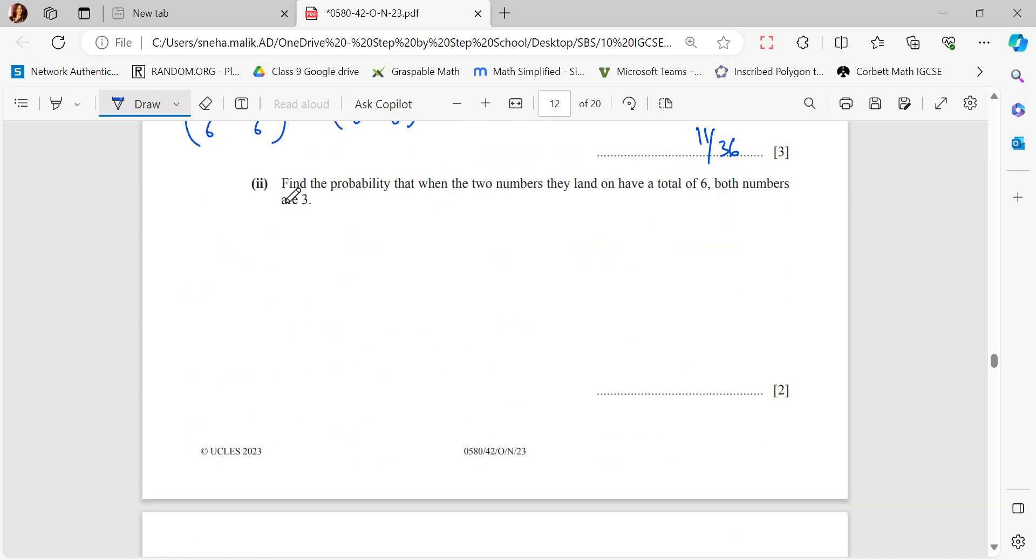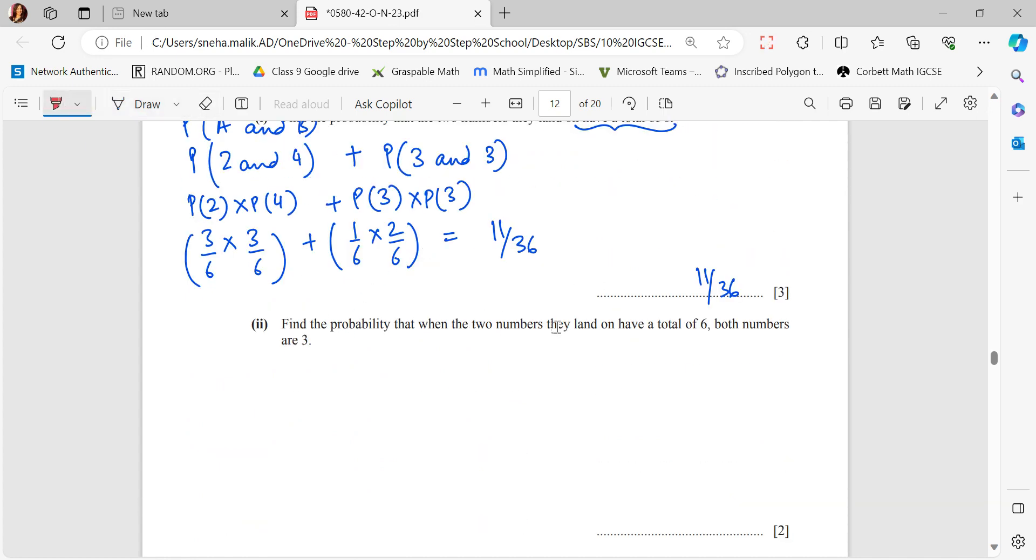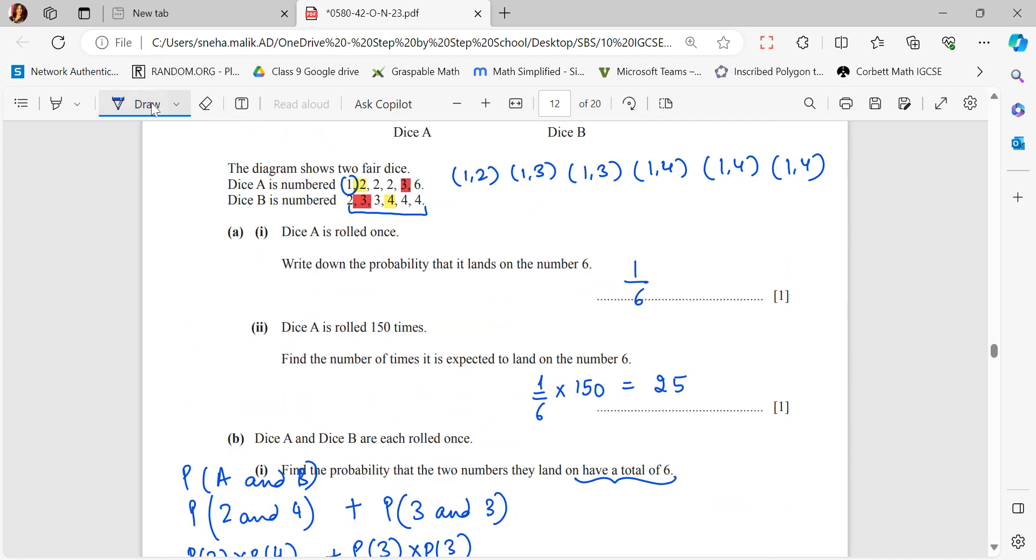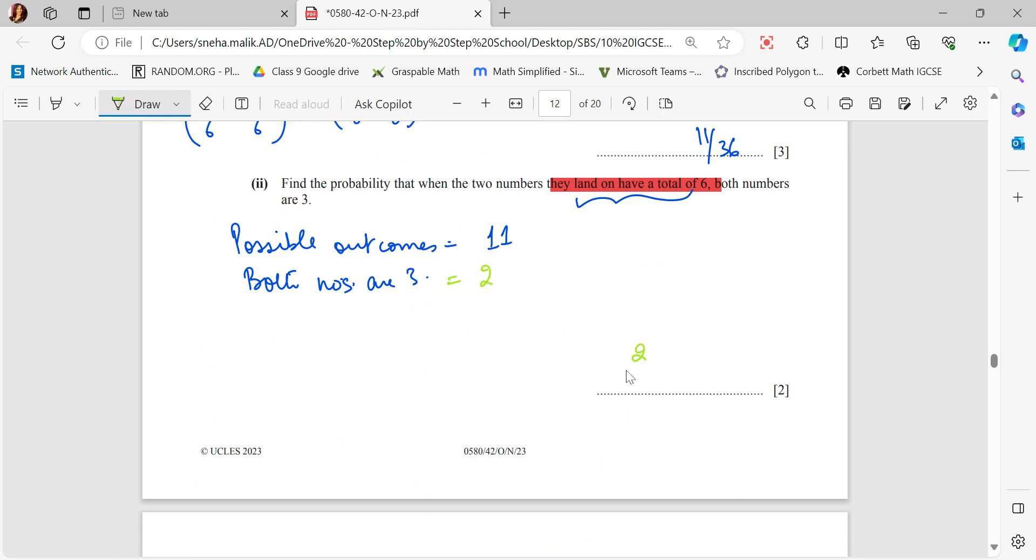Find the probability that when the two numbers they land on have a total of 6, then both the numbers are 3. That means my possible outcomes are boiling down to 11. Out of the 11 cases, what are the cases when both the numbers are 3? Out of these 11 cases, if I go back to my sample space, I'll see that this 3 can come with this 3 once, and this 3 can also come with this 3 another time once. A is 3, B is 3, and again A is 3 and B is 3. There are two such possibilities. So the probability would be 2 by 11. This is a classic case of conditional probability.